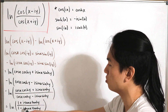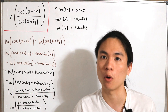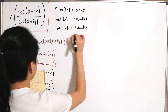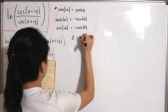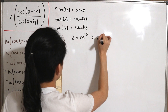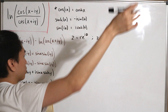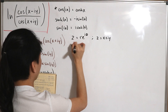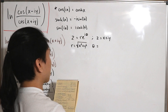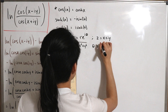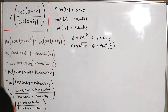To simplify further, we'll convert the numerator and denominator to polar form. Recall that for a complex number z = x plus iy, the polar form is r·e^(iθ), where the modulus is r = sqrt(x² + y²) and the argument is θ = arctan(y/x).